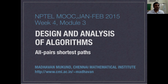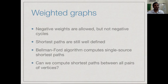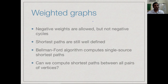Let us now turn our attention to the all-pairs shortest path problem, where we try to find the shortest paths between every pair of vertices in a graph. We are working with weighted graphs. We allow negative edge weights but not negative cycles, because with negative cycles the shortest path is not well defined. With negative weights it is well defined.